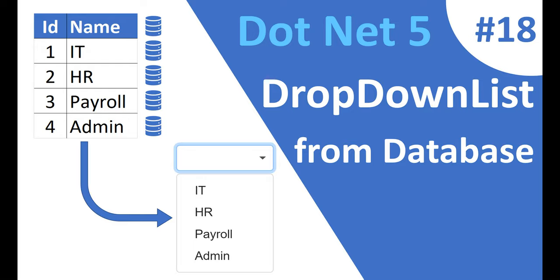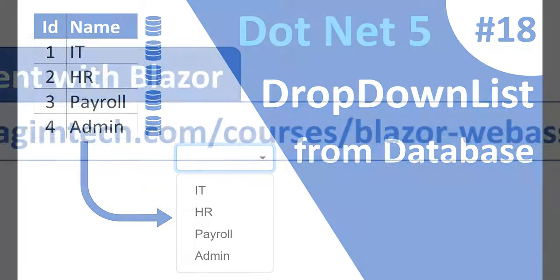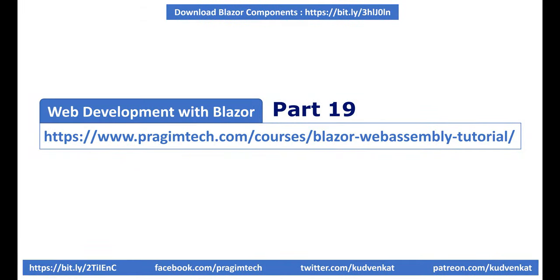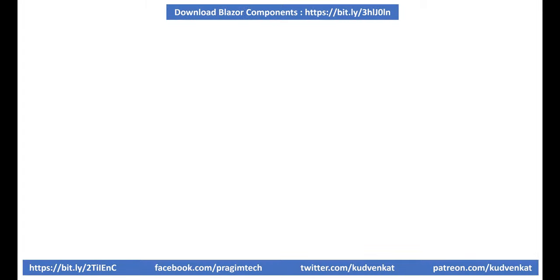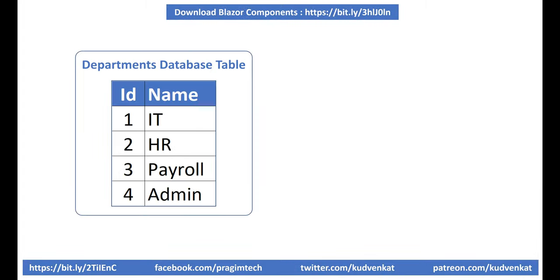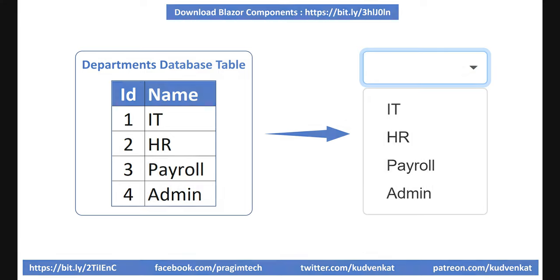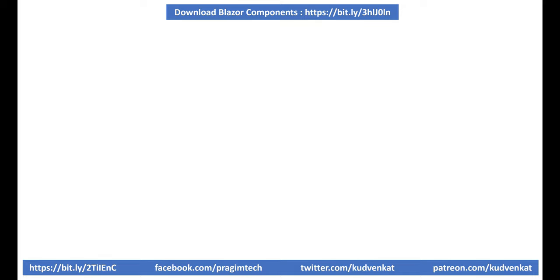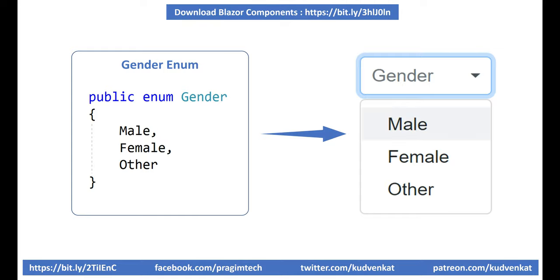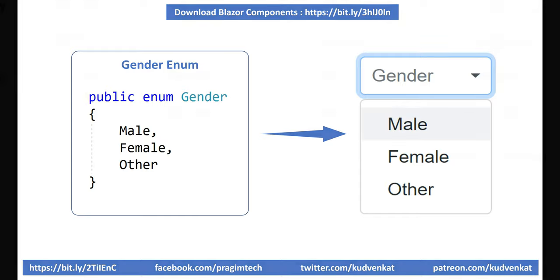Hey guys, I am Venkat and this is part 19 of the web development with Blazor video series. In this video we'll discuss how to bind data from a database table to a drop down list in ASP.NET Core Blazor. Another common use case is to bind an enum to a drop down list, so we'll be discussing that as well.